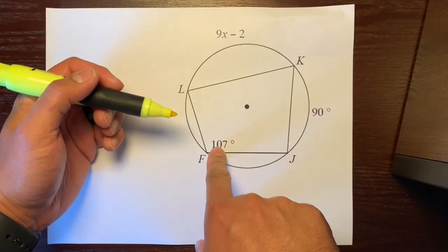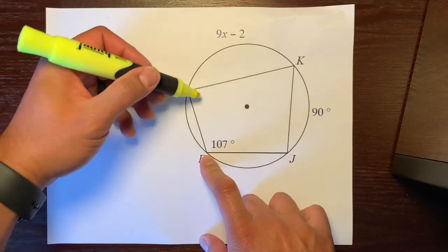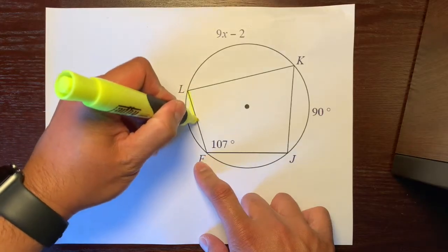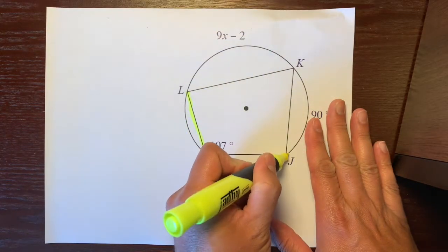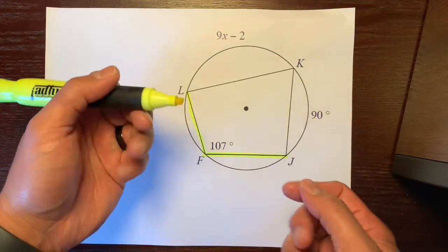So here's our 107 degree angle and the vertex is right on the circle. So we have this angle, which is an inscribed angle, because the vertex is on the circle.